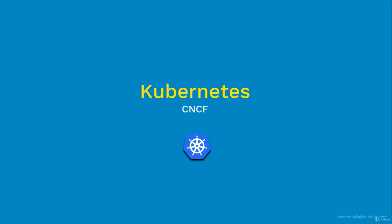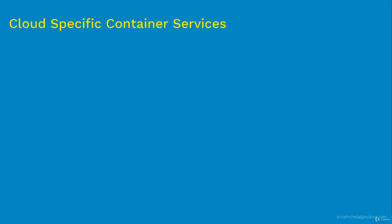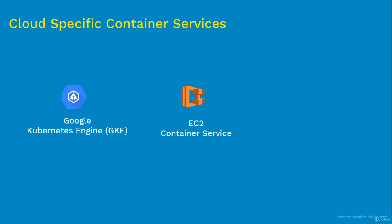Two reasons Kubernetes stands out: first, it has the strongest open source community behind it; second, it comes straight from Google and is now donated to and managed by the Cloud Native Computing Foundation, CNCF. The three major cloud providers — Google Cloud, Microsoft Azure, and Amazon Web Services — each offer container management services: Google Kubernetes Engine, Amazon Elastic Container Service, and Azure Container Services. Although they have their own ways, they all provide an option for using Kubernetes on their platforms.